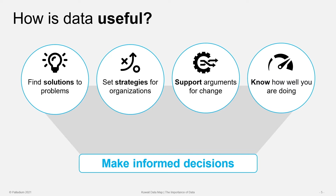How is data useful? It's useful in a lot of ways for making different kinds of decisions. It can assist in finding solutions to problems, helping organizations develop strategies to set and achieve their goals, providing information to advocate for some change such as a new social policy or revision of an existing one, and knowing how you're doing — whether that's an organization assessing its progress, educators assessing student progress, or keeping track of one's own health. All these uses lead to data-informed decisions.